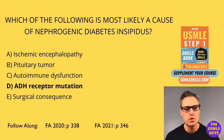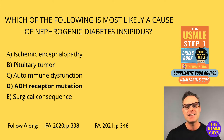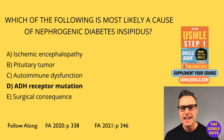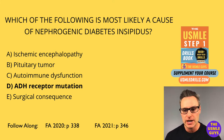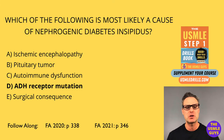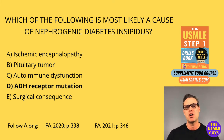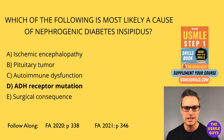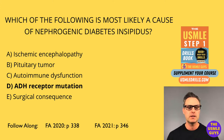Another way we can figure out the cause is with the water deprivation test. In cases of central diabetes insipidus, we'll see more than a 50% increase in urine osmolality after administration of an ADH analog. Whereas in nephrogenic diabetes insipidus, the water deprivation test will result in essentially minimal change, because it's not a problem with ADH — it's a problem with the receptor on the kidney.